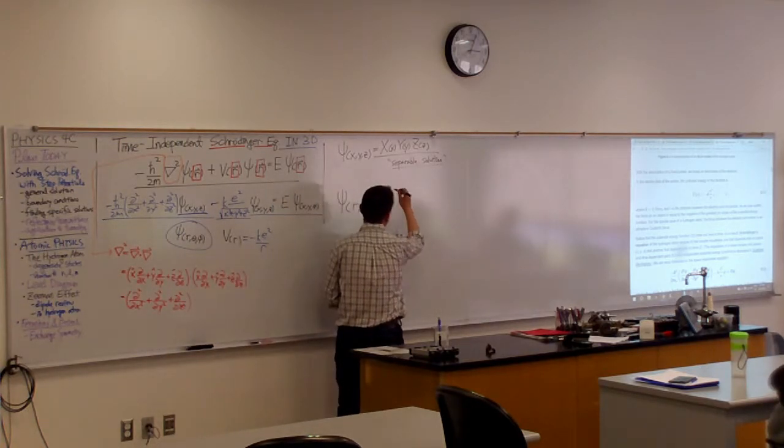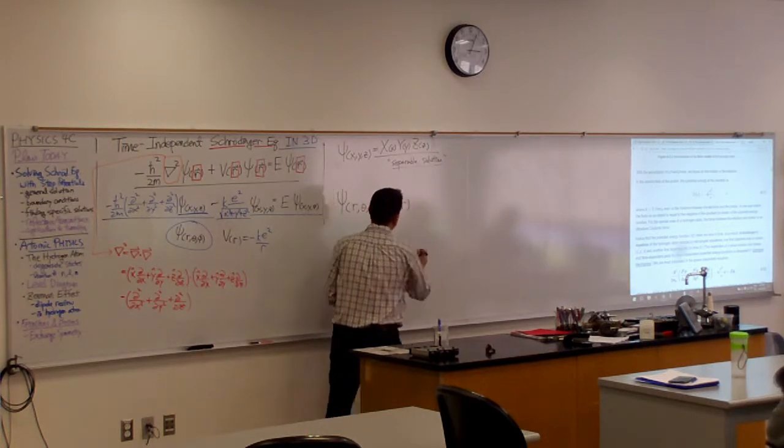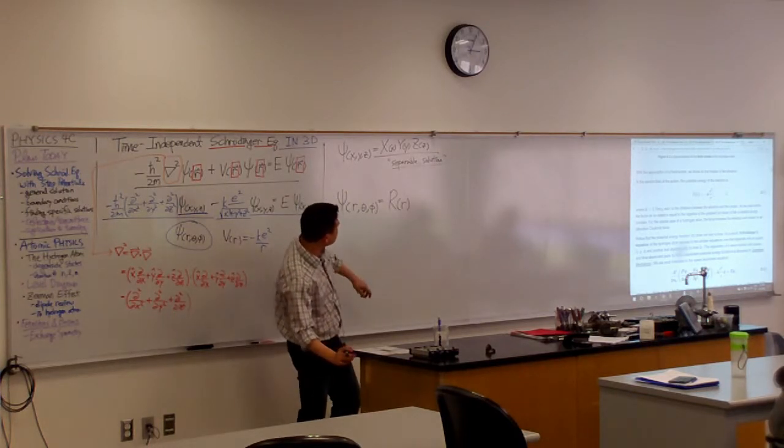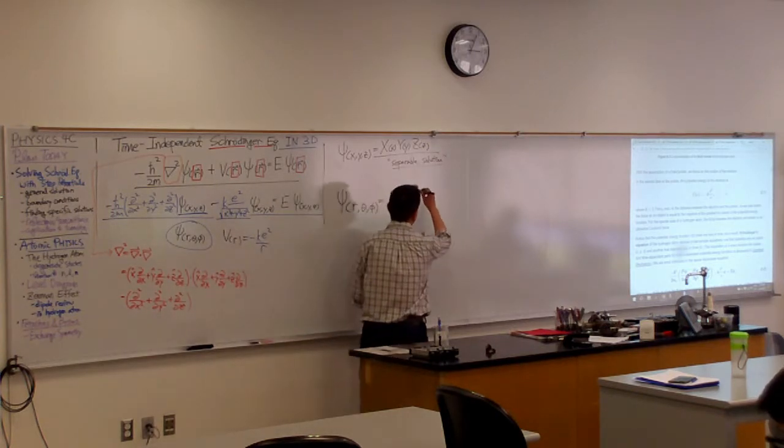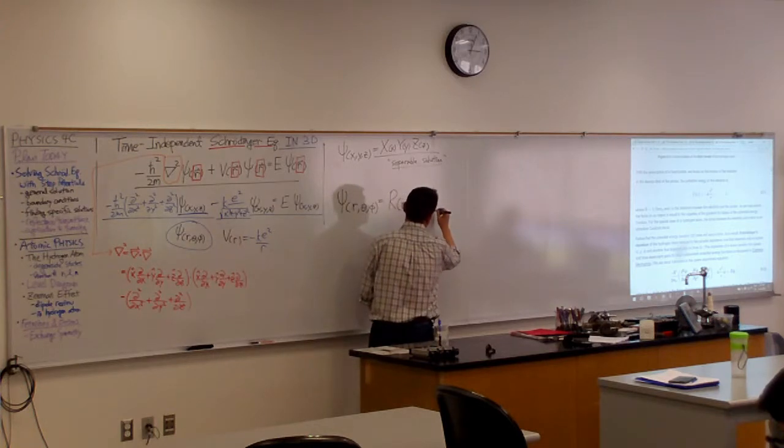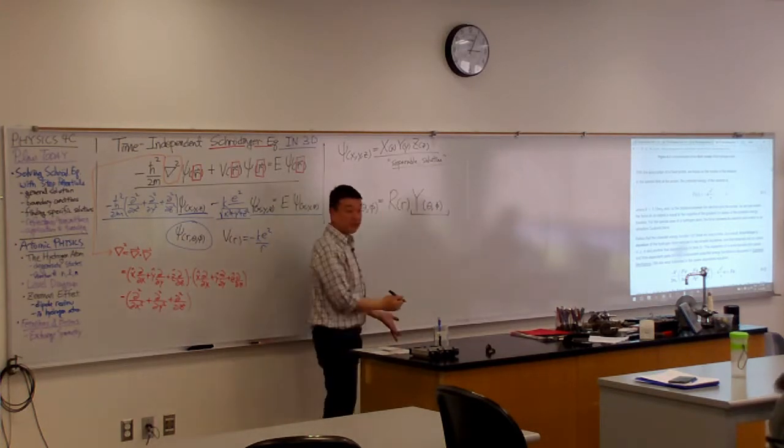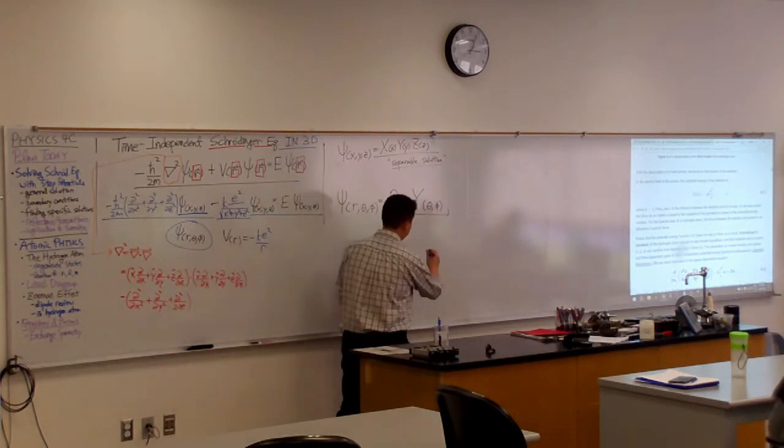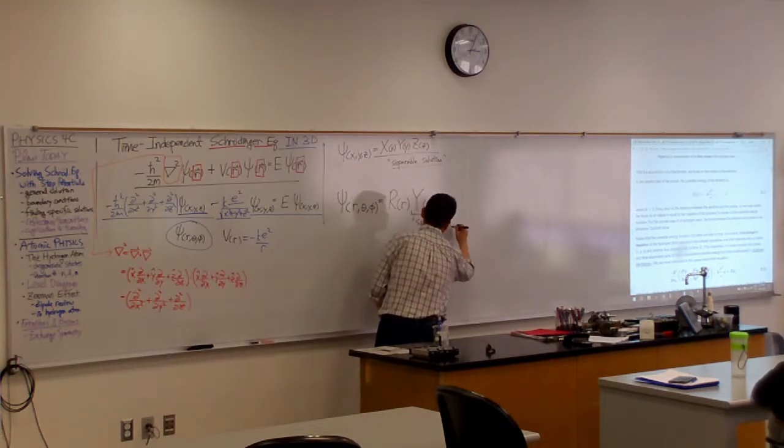you can separate this into two solutions. You can separate it into the radial function, which is going to be a function of radius alone. So it's function of R alone. You can separate it into radial function, and you can separate it into angular function that's a function of theta and phi. And this actually has a special name to it.